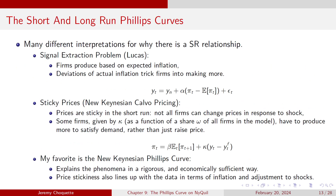There are many different interpretations for why there could be a short-run relationship. There's the signal extraction problem from Robert Lucas: firms produce based on current expectations of inflation, and they can only produce more given higher inflation if that increase in inflation tricked them into making more.